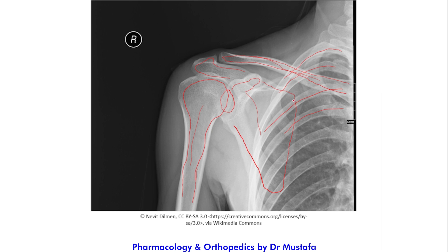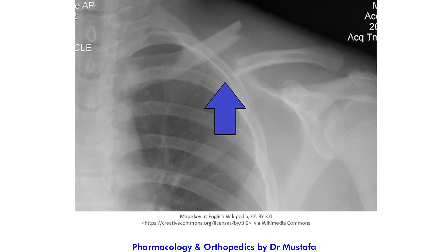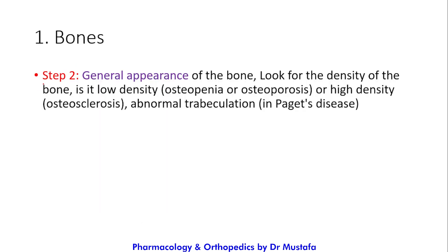Also look at the lung to check if it is shrunken, which would indicate pneumothorax — in this example the lung is normal. Here is another example with a clavicular fracture: the clavicle is fractured with displacement, which is very obvious. You also check for fractures in the humerus, glenoid, acromion, coracoid, and scapula — all of which are normal here — and again look at the ribs and lung.